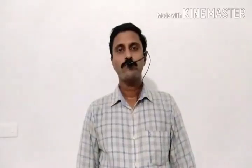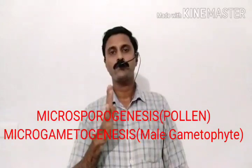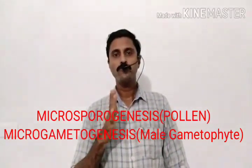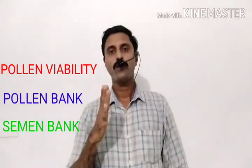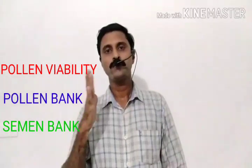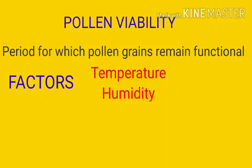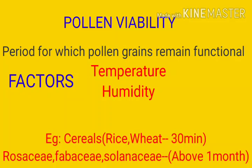In the last class, we completed the two main processes in pre-fertilization. Now we will move on to three terms: pollen viability, pollen bank, and semen bank. The period for which pollen grains remain functional is called pollen viability — that is, the liveness of a pollen. Whenever pollen grains are shed from a flower, they have a live period, which is called viability.